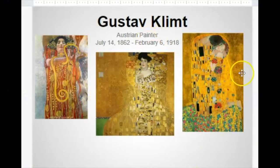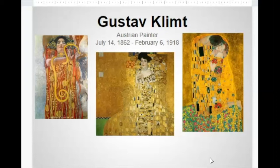Gustav Klimt painted these paintings. He was a painter from Austria. He was born in 1862 — that was the time that Abraham Lincoln was alive — and he died in 1918. If you look, these paintings are very similar. There's a lot of pattern and a lot of repetition in his fabrics.